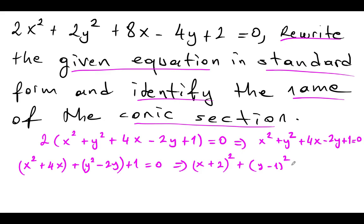And then plus 1 equals on the right side. Now let's be aware of this. When I open these parentheses, x squared plus 2 times x times 2, which is 4x, plus 4. So there is extra 4 here. To eliminate this, I have to add to the right side 4. And when I expand this, y squared, which is here,